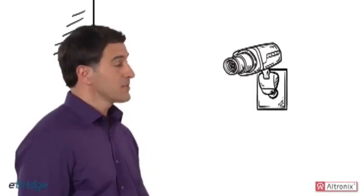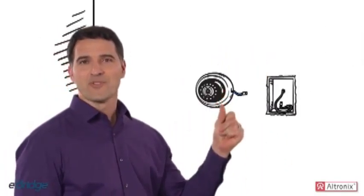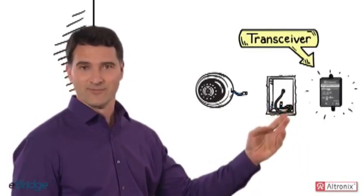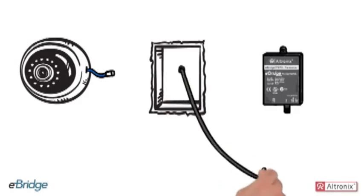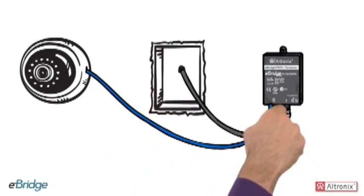Let me show you. Simply remove an old analog camera and replace it with a new IP megapixel camera and an eBridge transceiver. Attach the coax cable to the transceiver, then plug in the Ethernet cable that comes from the camera.